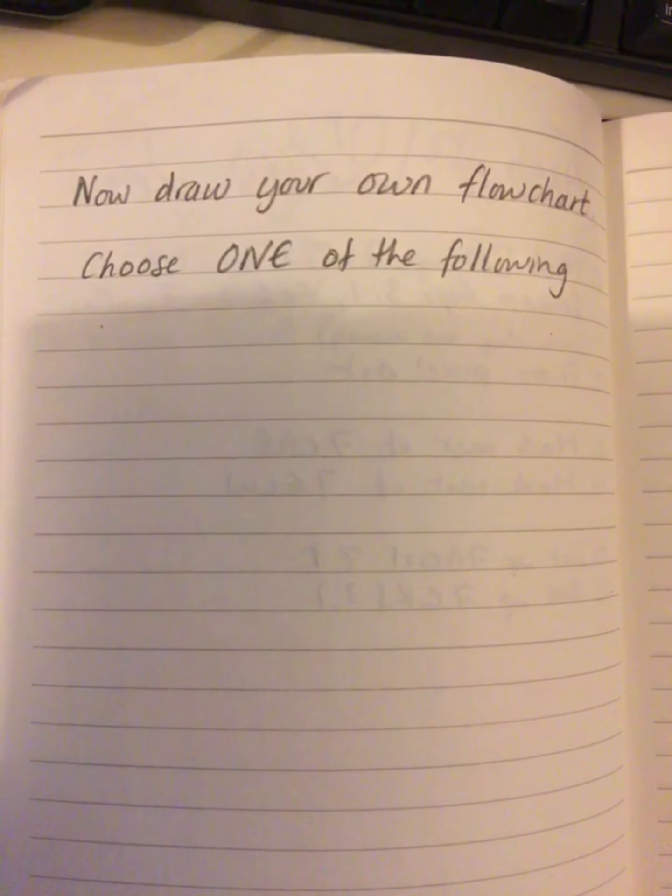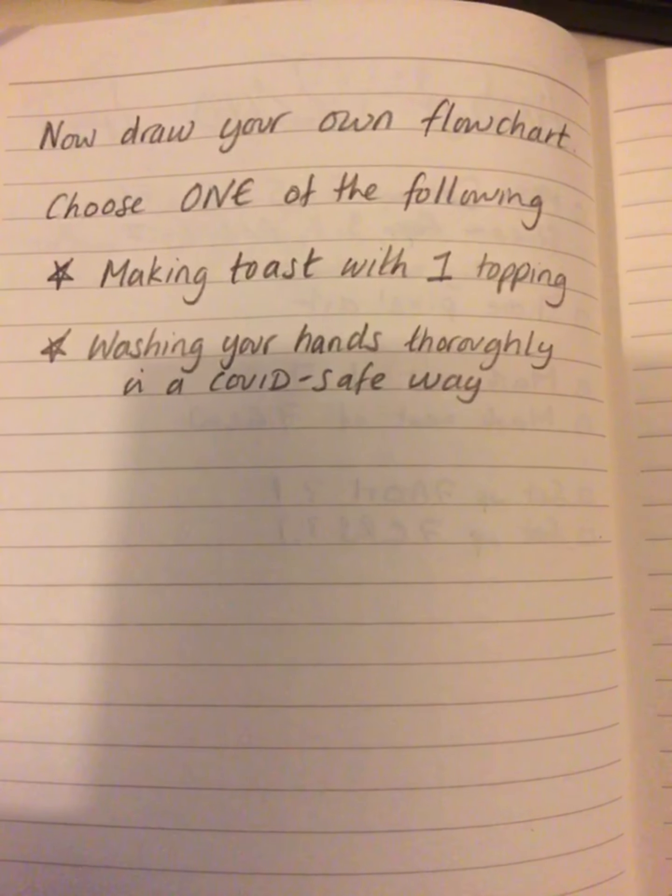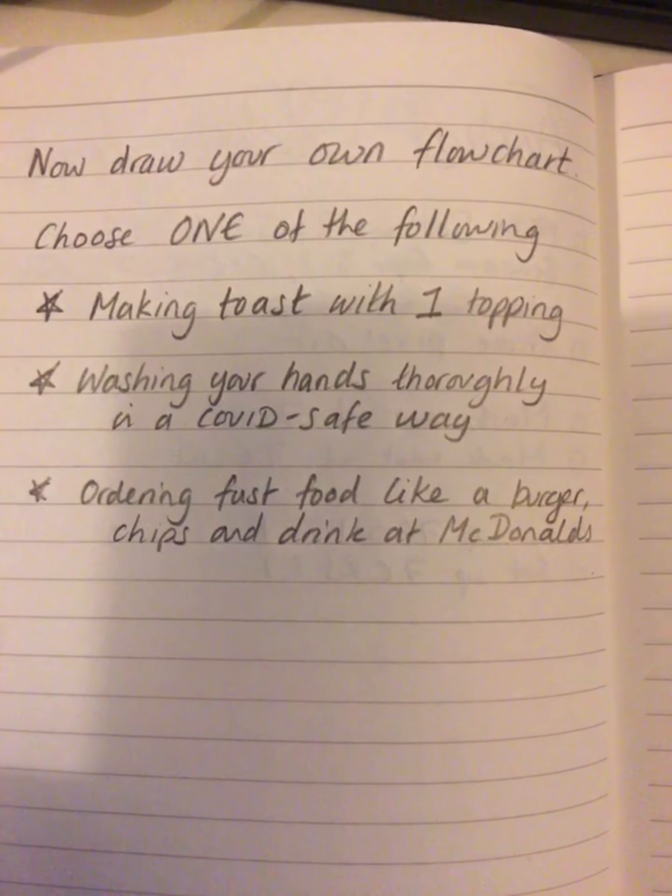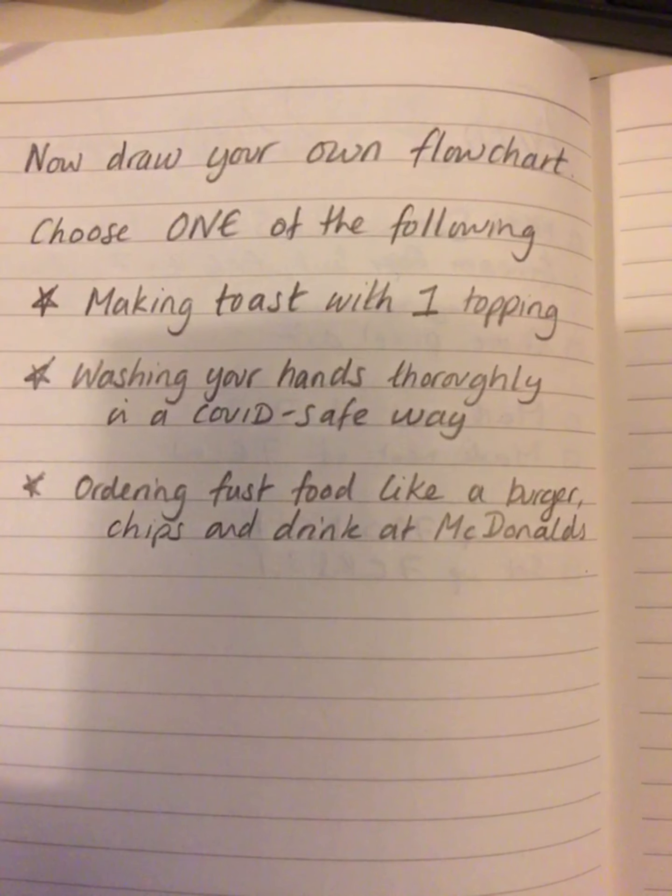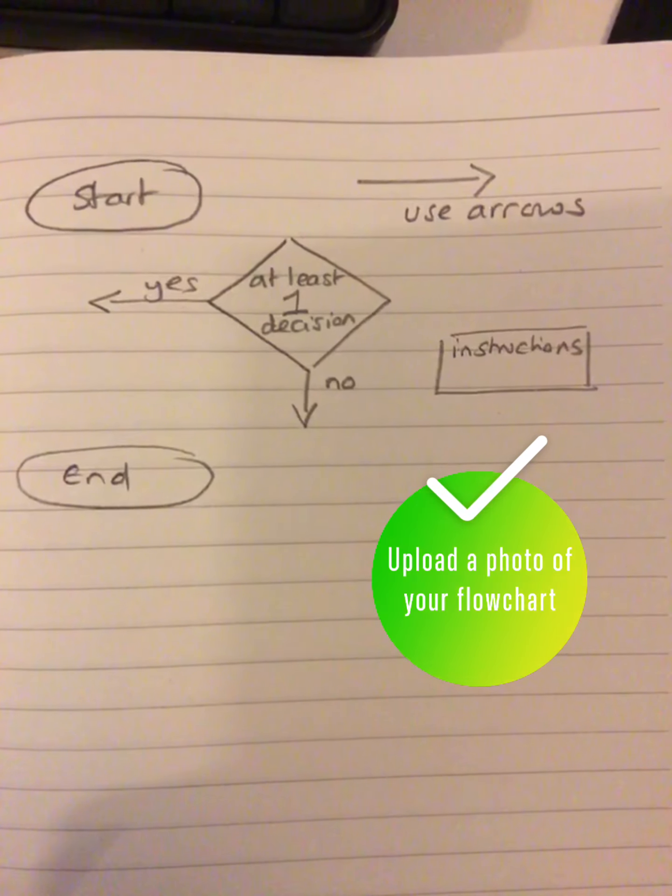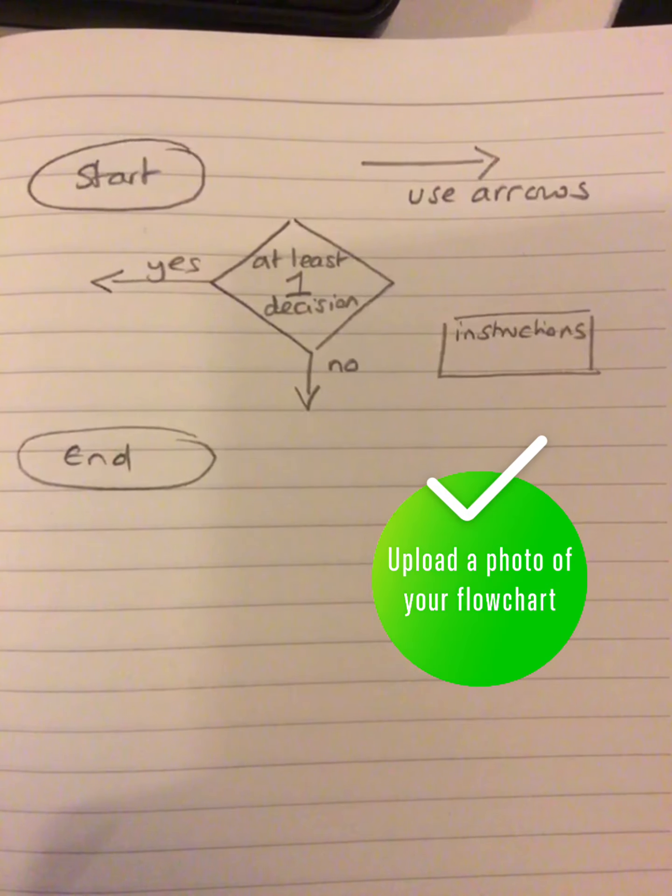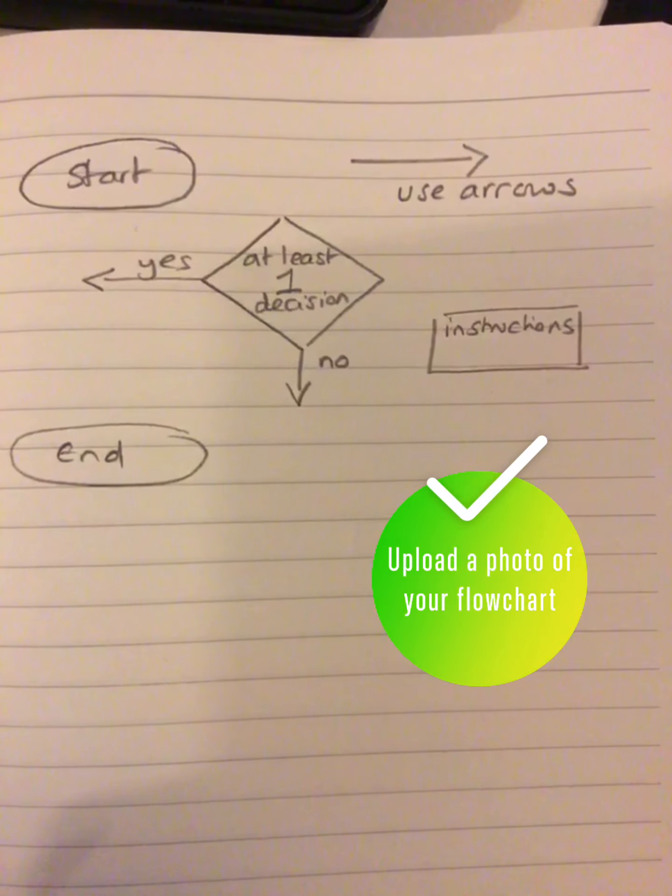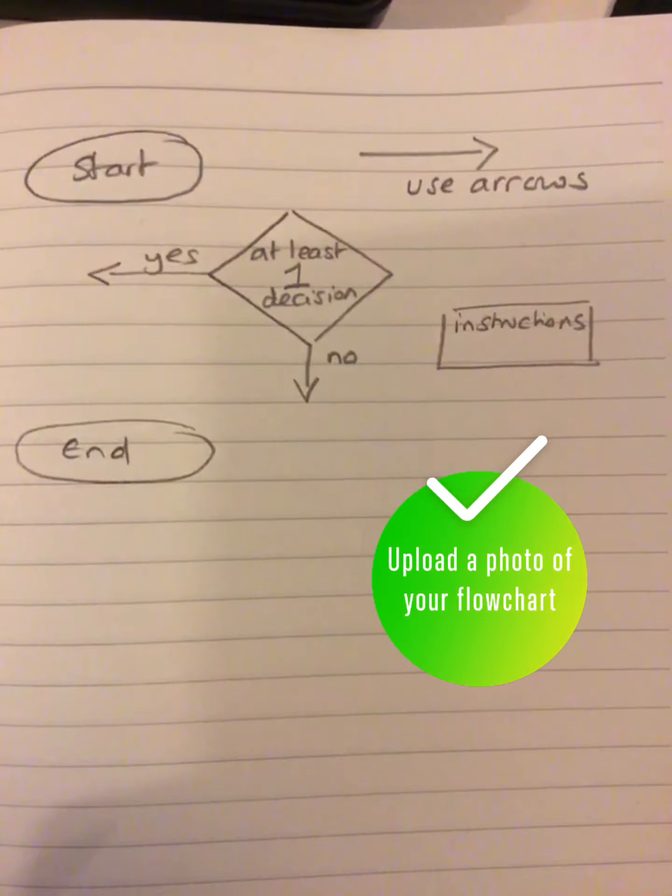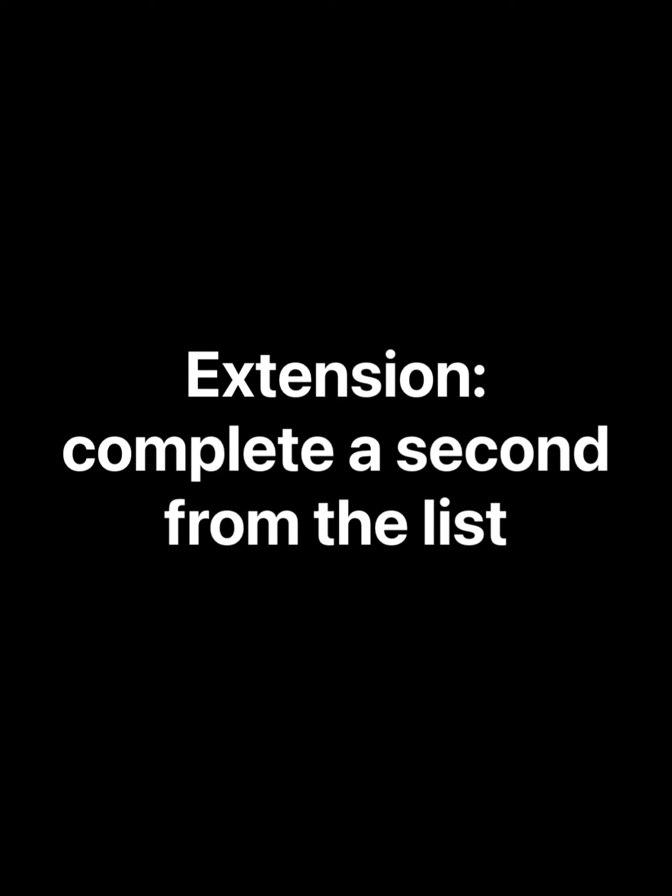Now grab a pencil and paper. It can be rough paper or a notebook, that's fine. And you're going to be drawing your own flowchart. Choose one of the following to make your flowchart. Making toast with one topping, like butter. Washing your hands thoroughly in a COVID-safe way, with soap. Or ordering fast food, like a burger, chips and drink at McDonald's. Use the shapes from the diagram before. Make sure you have a start and an end. Include at least one decision in that diamond shape. And don't forget to label your answers like yes and no. And include all other instructions in rectangles. Make sure you use arrows to show which direction you're flowing in the flowchart. Good luck. Hand your work in on Google Classroom when you're done. If you're super quick, do a second one from the list.